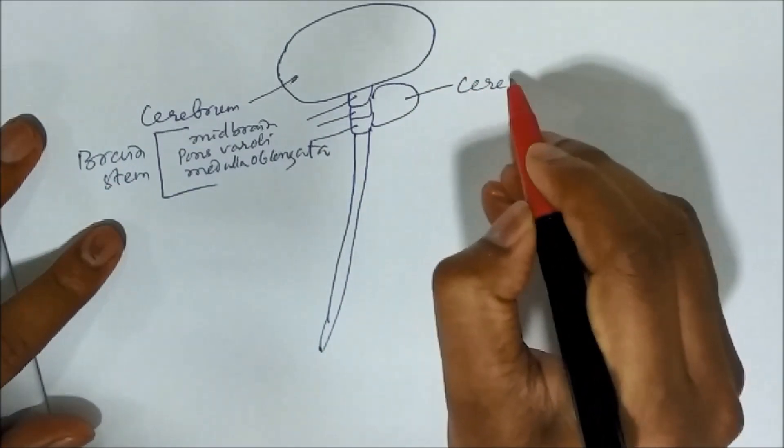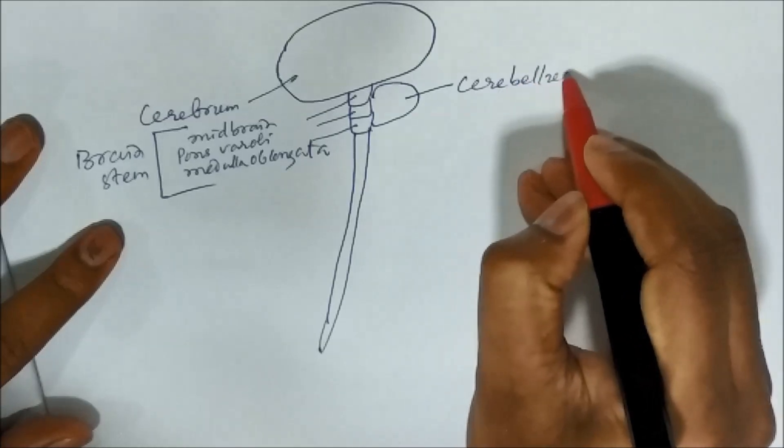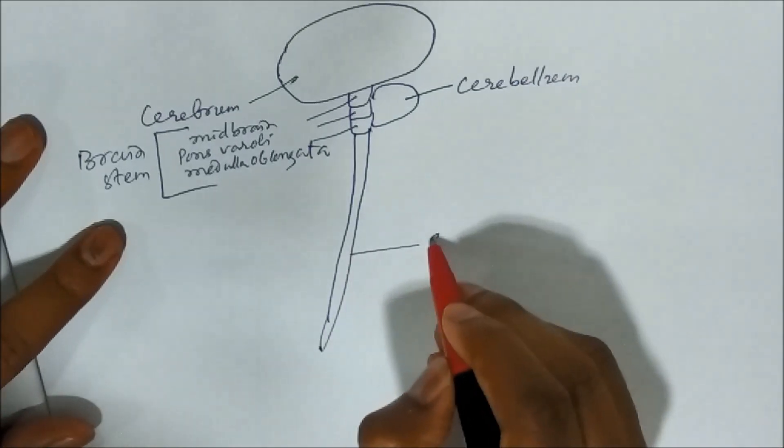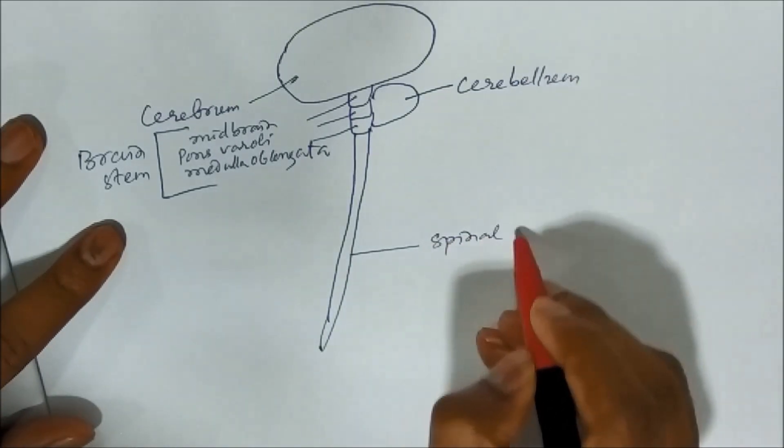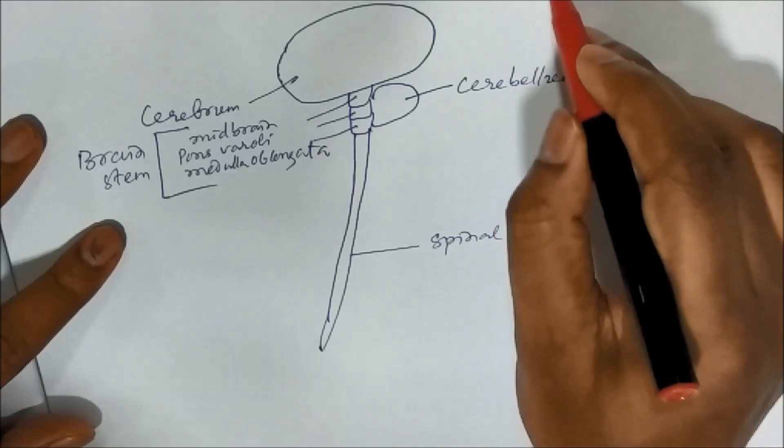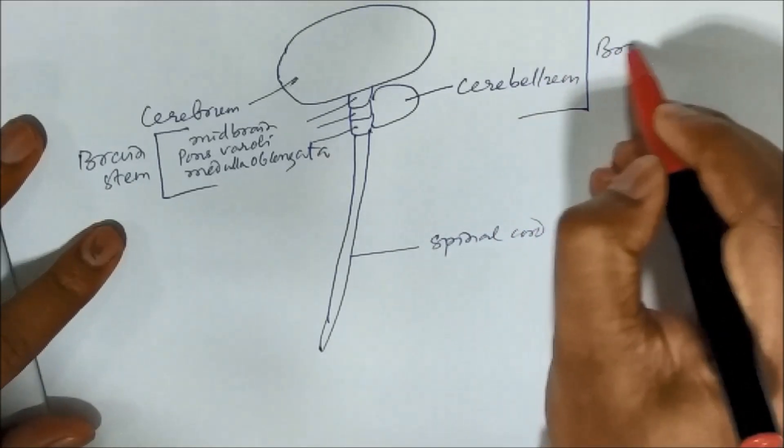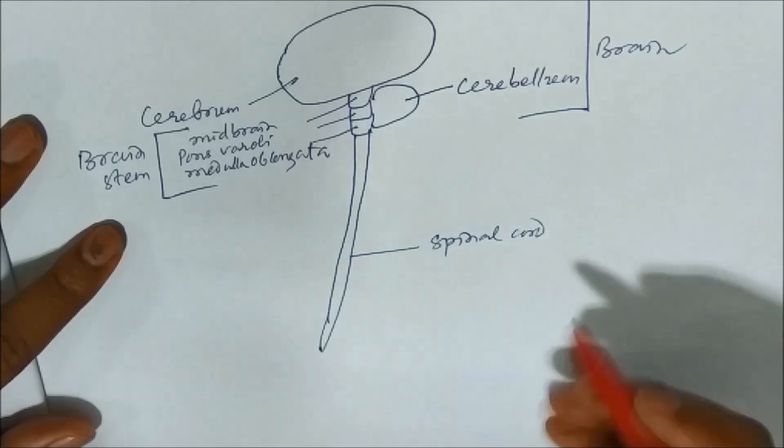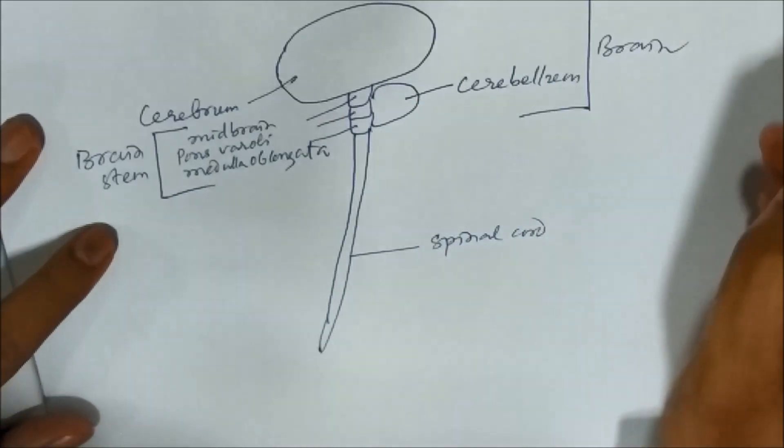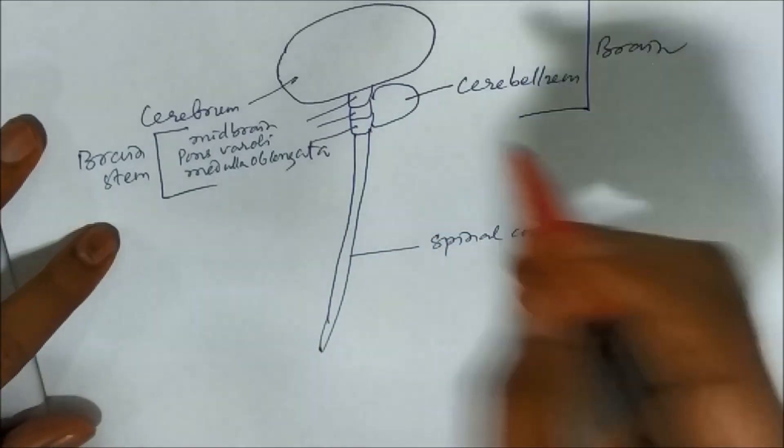And these three together known as brain stem. This is the cerebellum. And this is the spinal cord. So this part is your brain and then spinal cord. Brain and spinal cord together is known as the central nervous system.